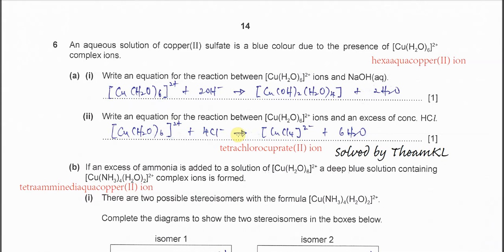Question 6. An aqueous solution of copper(II) sulfate is blue in color due to the presence of the hexa aqua copper(II) ion. The copper complex ion with six water ligands is called the hexa aqua copper(II) ion.